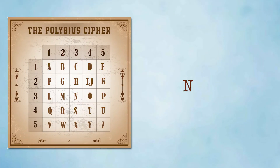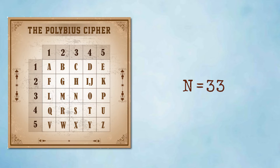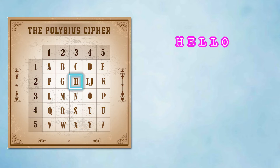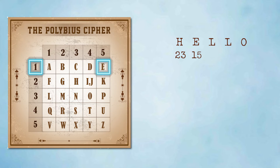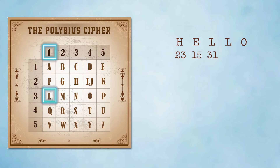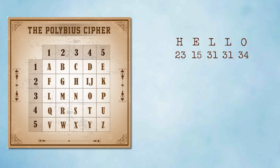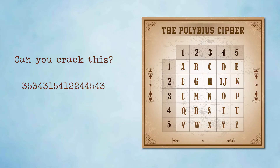If we need to write the letter N using the Polybius square, we find the location of the letter N — it is in the third row and third column, so N becomes 3 3. Let's say we want to encode HELLO. H is 2 3, E is 1 5, L is 3 1, L is 3 1, and O is 3 4. So HELLO becomes 2 3 1 5 3 1 3 1 3 4. Now figure this out — did you get it? Mr. Polybius will be very happy seeing your progress!